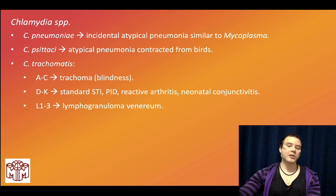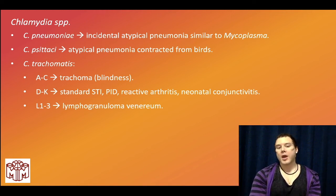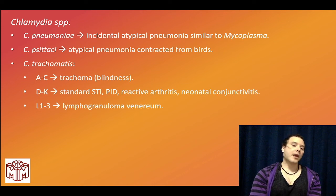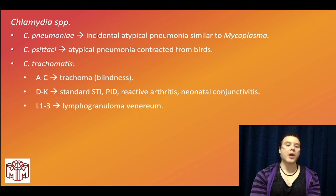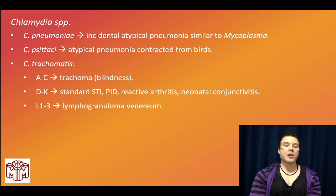Chlamydia trachomatis A through C causes trachoma — roughness of the backs of the eyelids, causing blindness usually in Africa. L1 through L3 causes lymphogranuloma venereum — lower yield, but be aware it can cause anal lymphadenopathy causing difficulty with defecation.